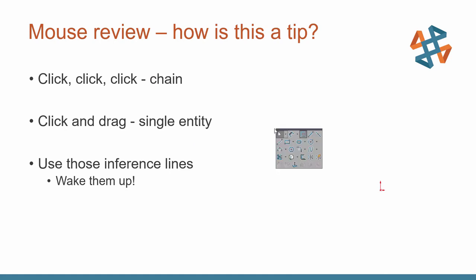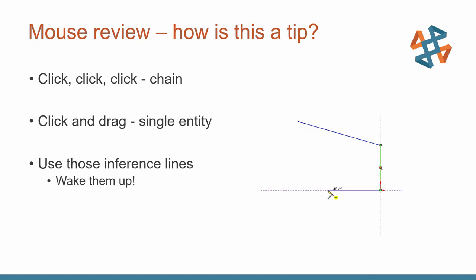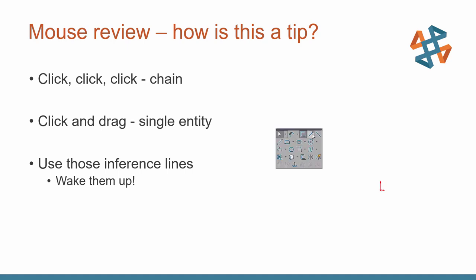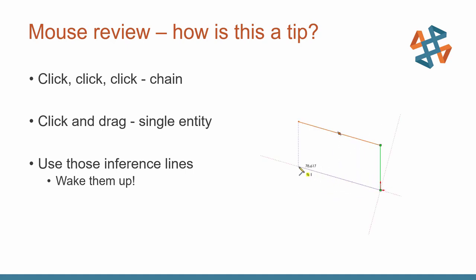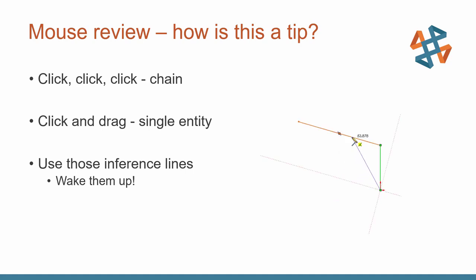What about just driving the mouse? There's the de facto standard way of click, click, click to build a chain of entities. But don't forget the original way: click, hold down the left mouse button, and drag to create a single entity. Also, wake up those inference lines — hesitate your mouse over existing geometry and you'll see those dashed inference lines pop up. Follow them and you can add extra relations such as parallel on the fly. It's all about saving time and steps.